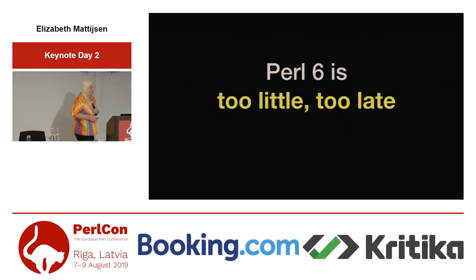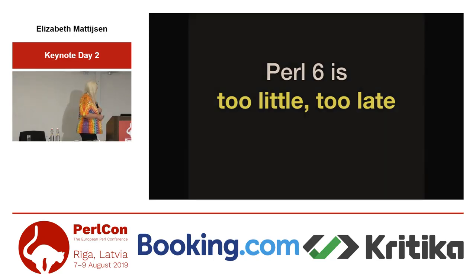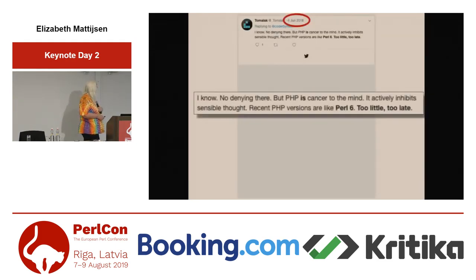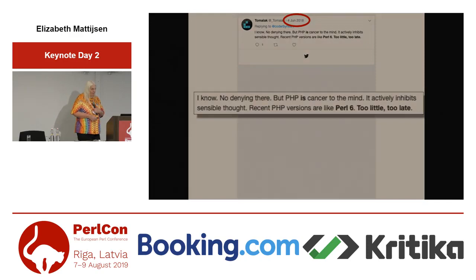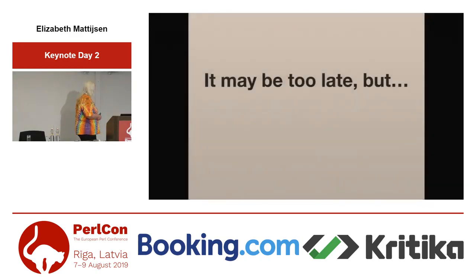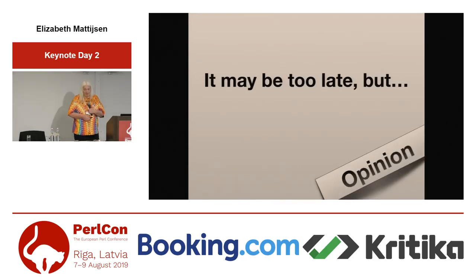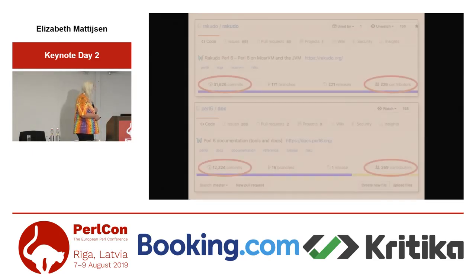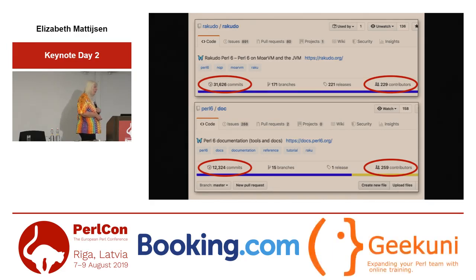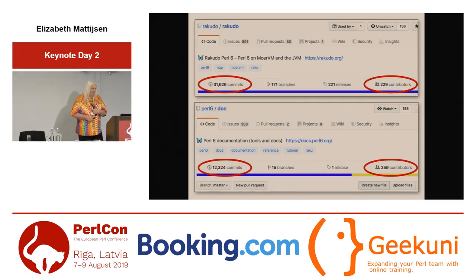Perl 6 is too little, too late — very much alive still. I would argue that it may be too late, but I don't think 'too little' applies. If you look at the number of commits for Rakudo — 31,000 so far — and for the documentation, over 12,000 commits, and the number of contributors, I would say it's not too little. If anything, it's too much.